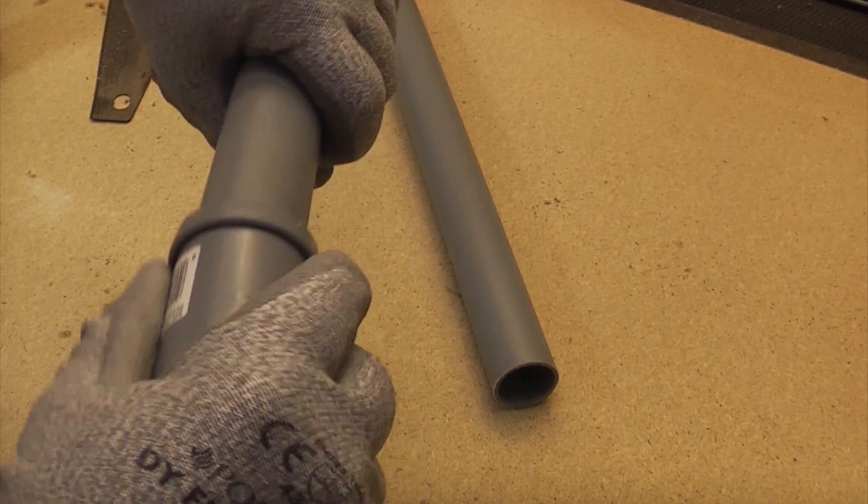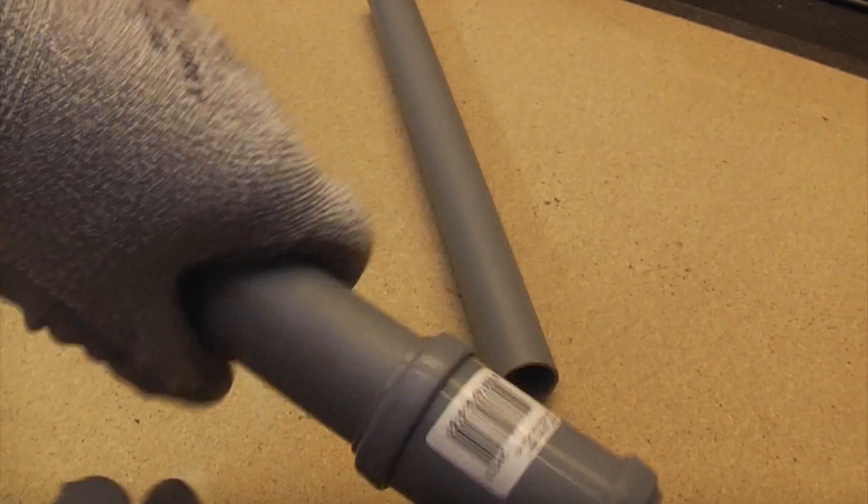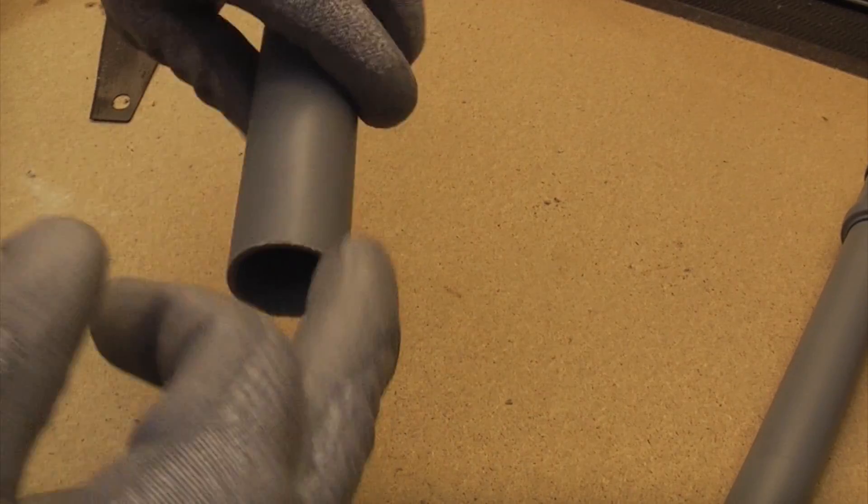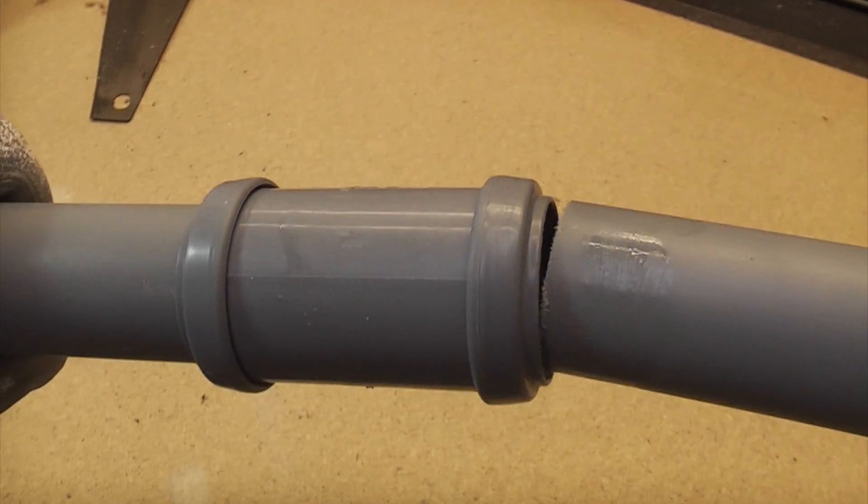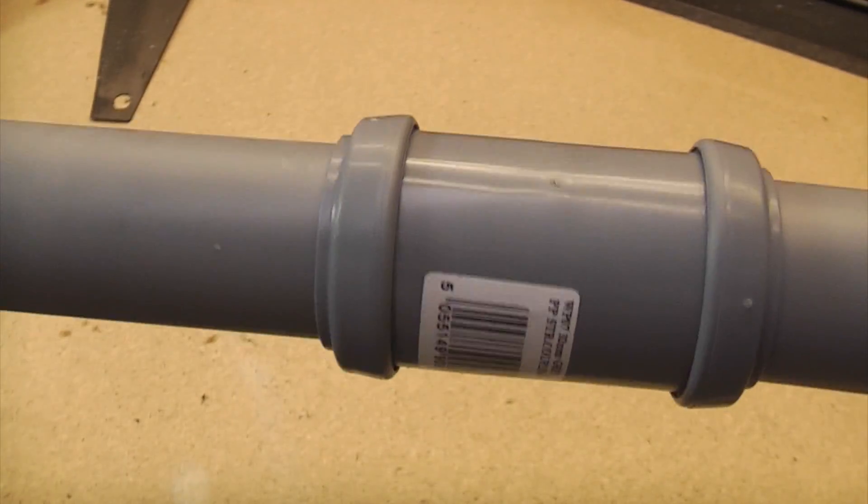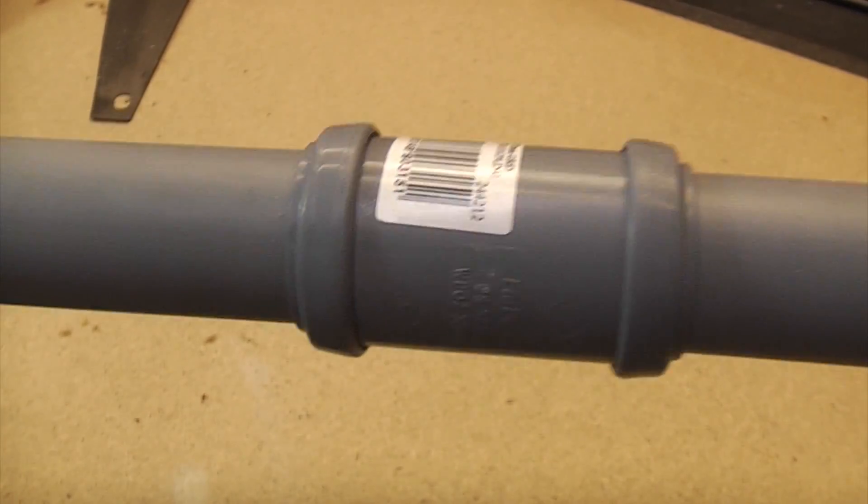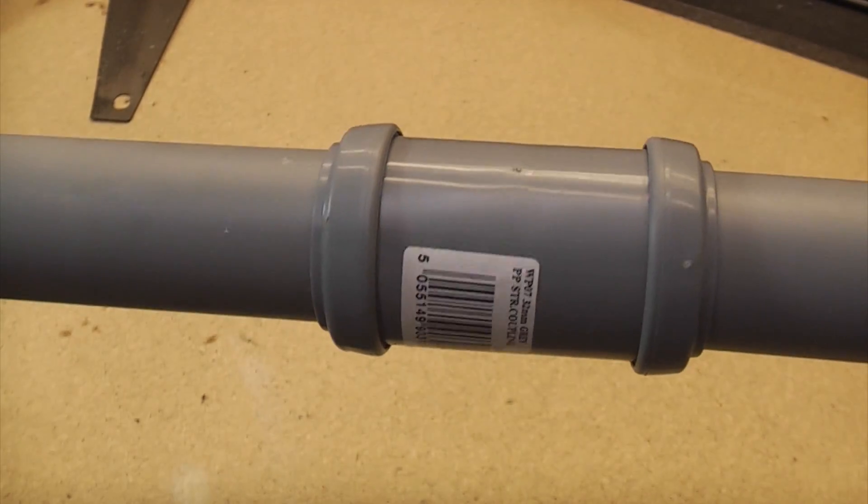So I'll just put that on there and then we can just push that in there and now that has made a good joint. So now we just need to do the same on the other side. So we can now just put the pipe into the fitting and just push it and turn it at the same time. And now we've got a push fit joint that's made. That is how you make a joint on push fit waste pipe.